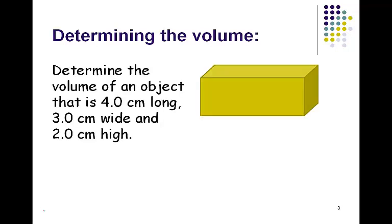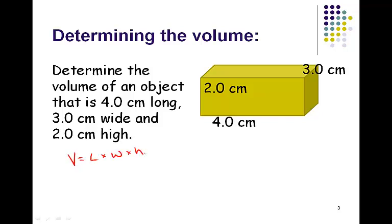Taking a look at a rectangular cube, we could determine the volume of an object that's 4 centimeters long, 3 centimeters wide, and 2 centimeters high. We can do this using the equation: volume equals length times width times height. So volume equals 2.0 centimeters times 3.0 centimeters times 4.0 centimeters, and we get a total of 24.